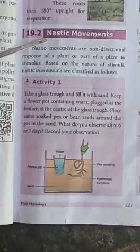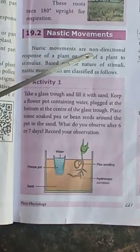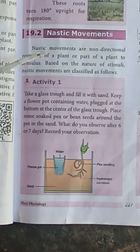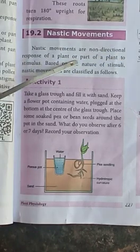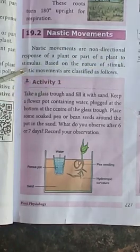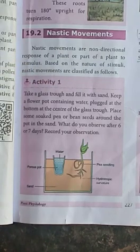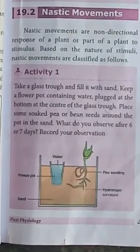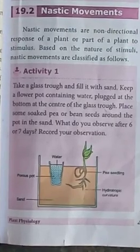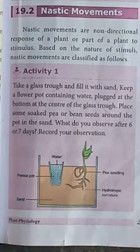Nastic movements are the non-directional response of a plant to a stimulus. Some external factors like light and temperature trigger nastic movements.